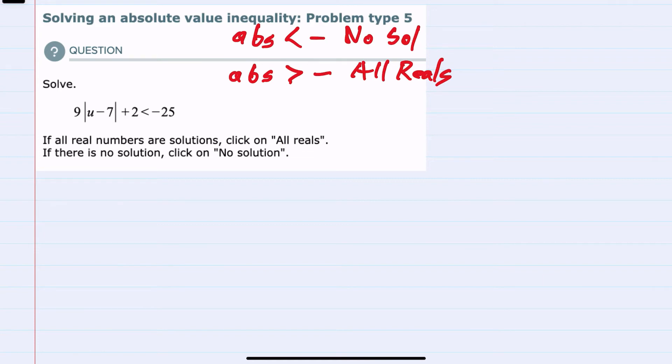The other two possibilities are that we could have an absolute value less than a positive number. This would be an and situation, where we would have to look at where the two solutions overlap, so we would need both of the two solutions to be true.